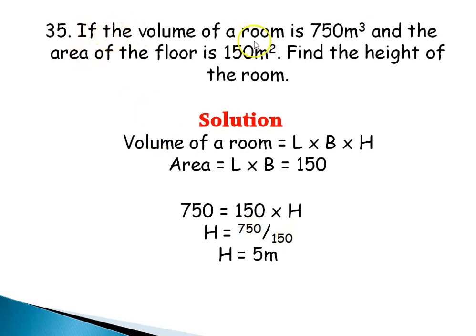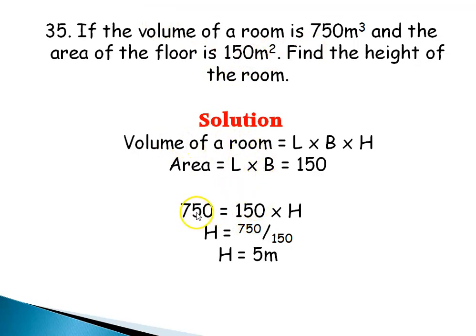Question 35: If the volume of a room is 750 cubic meters and the area of the floor is 150 square meters, find the height of the room. The formula is: volume = length × breadth × height, and area = length × breadth = 150. So 750 = 150 × H. Dividing both sides by 150, H = 750 ÷ 150 = 5 meters.